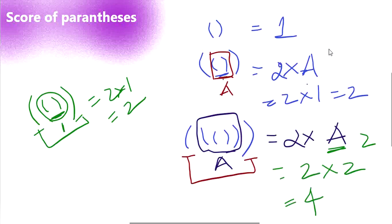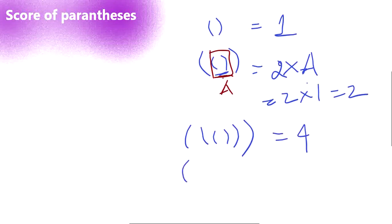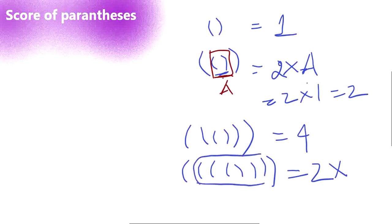If we expand one more level, it is going to be 2 into 2 into 2. Our A from the previous step is 4, so 2 into 4 is going to be 8. This is how our parenthesis scoring works — as every level goes up, it is going to double the value.